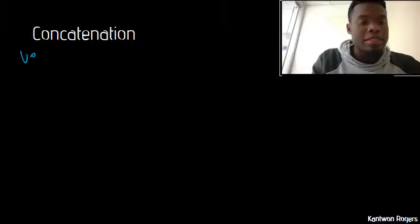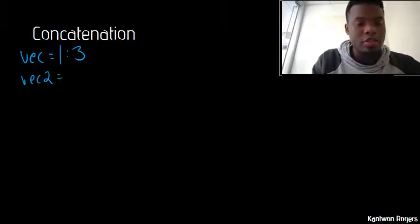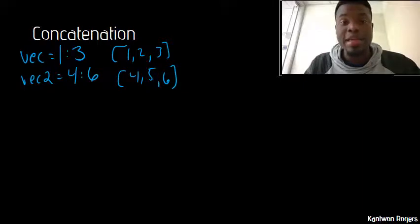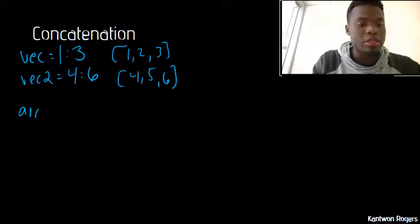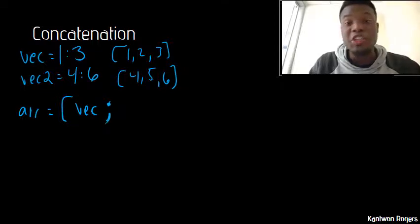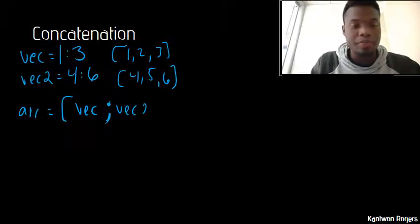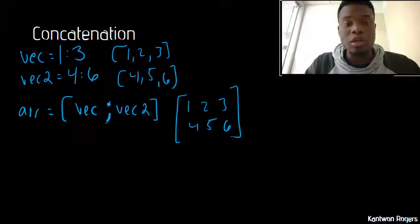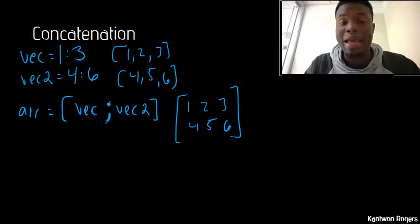As an example, let's say I had a vector that was one, two, three — using the colon operator — and another vector that was four, five, six. If I wanted to create an array where I stack these on top of each other, I would say array equals vec vertically concatenated with vec2. At the end I would get an array that looks like that. When vertically concatenating, the number of columns of whatever you're concatenating together must be the same.